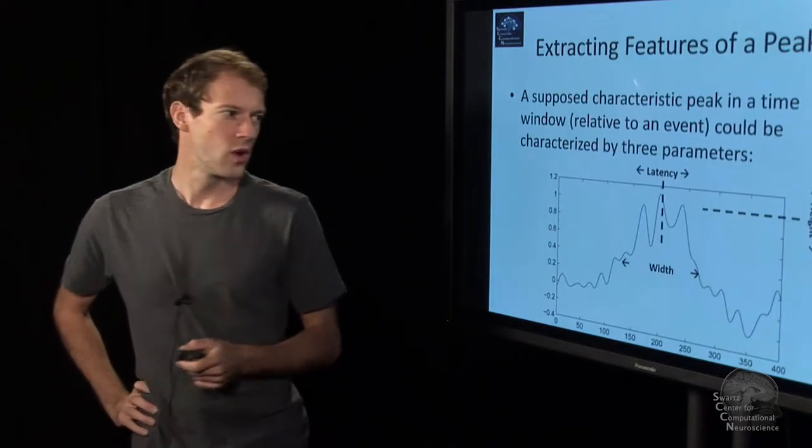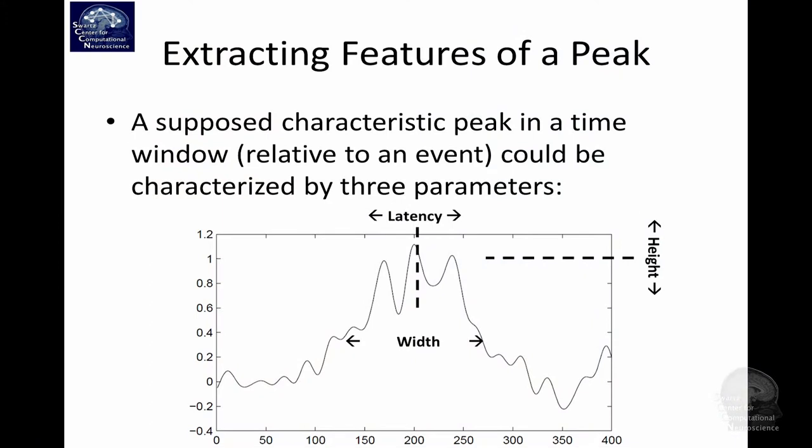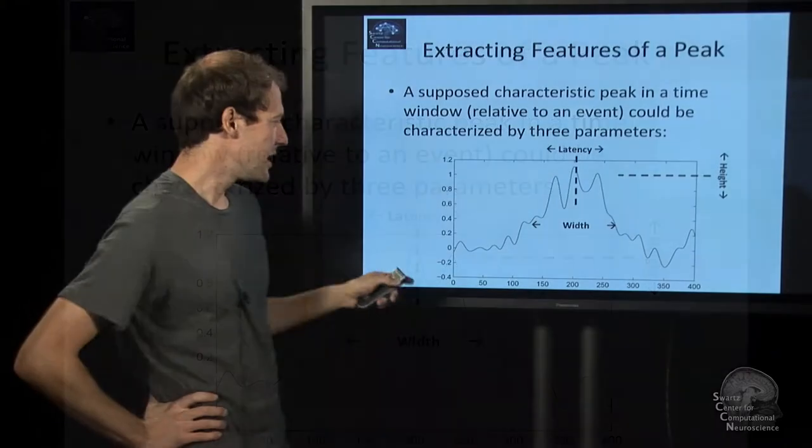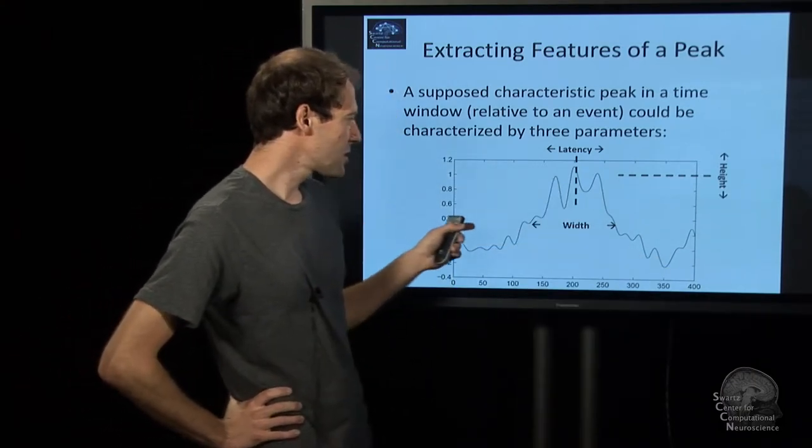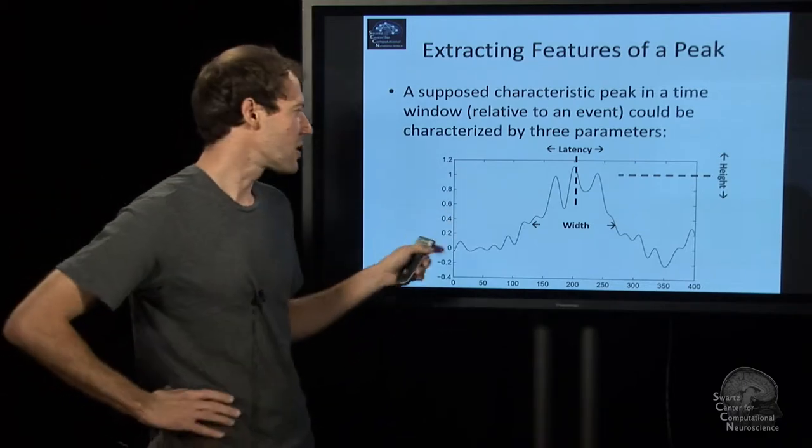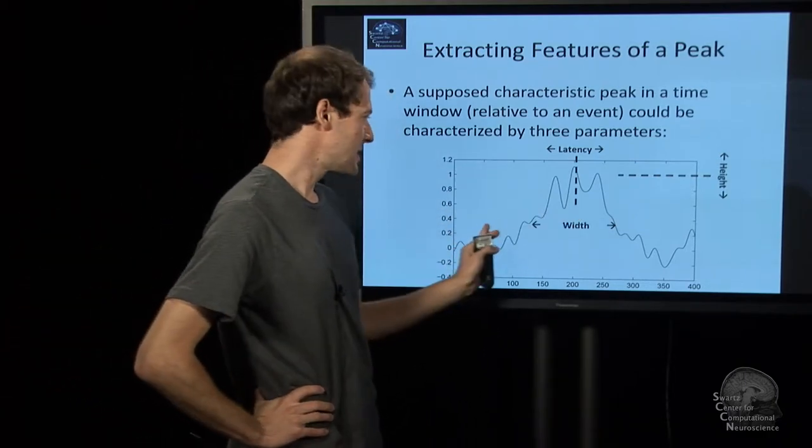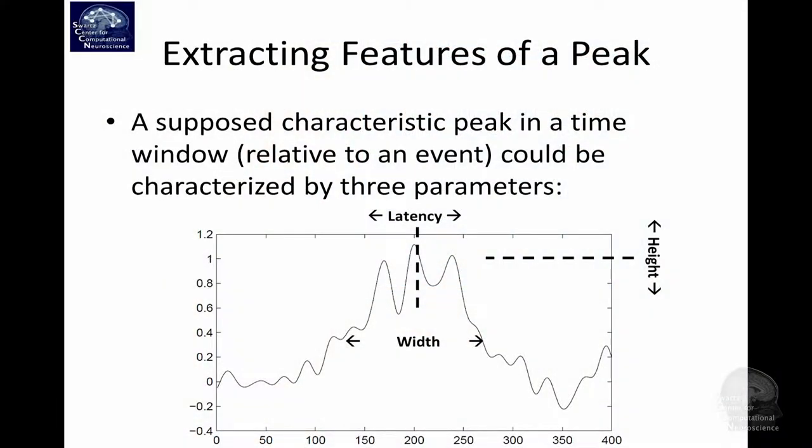The first question is, what kinds of features could we use to characterize EEG in a compact manner? Here is a simple example. If you have one channel of EEG, you might think there's perhaps a peak when the person sees the image, and you could characterize a peak by its width and its latency in time. This is the second parameter. The third parameter would be the height or the amplitude of the peak. You've taken a whole series of EEG values and reduced it to three numbers.